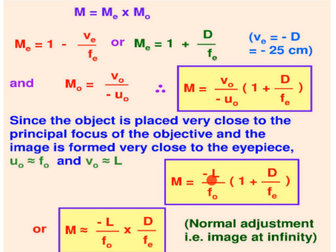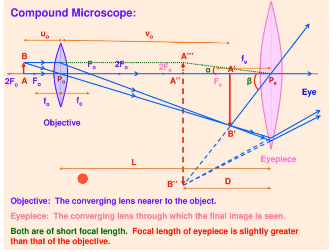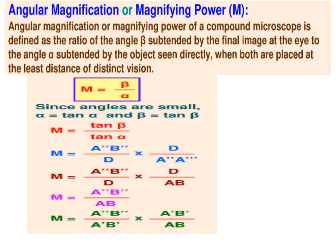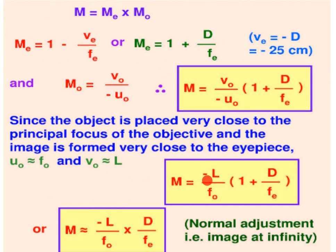Therefore, M is equal to minus L upon F0 in bracket 1 plus D upon FE. This is for the case when the final image is at the near point. For normal adjustment, that is when the image is at infinity, M is equal to minus L upon F0 into D upon FE.